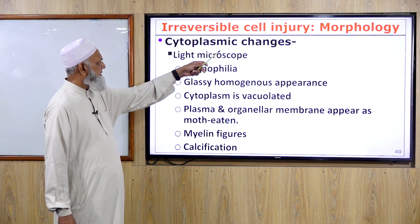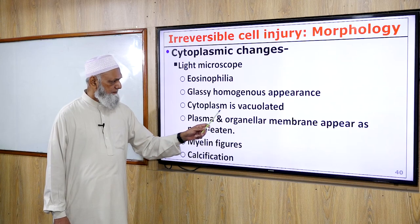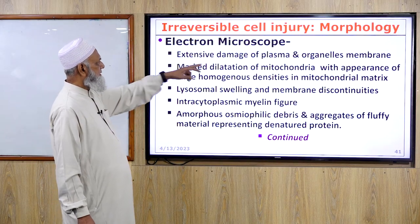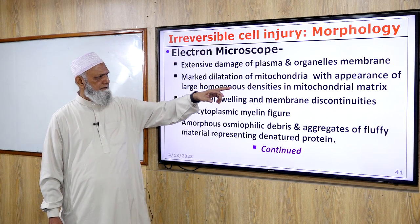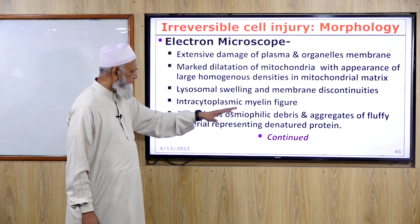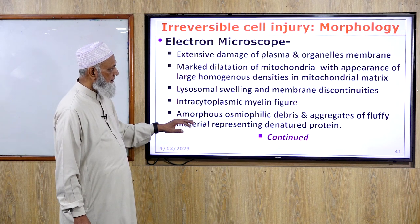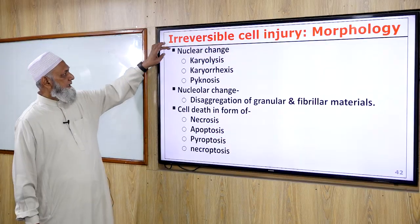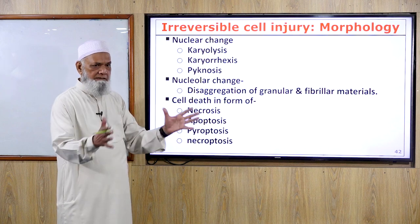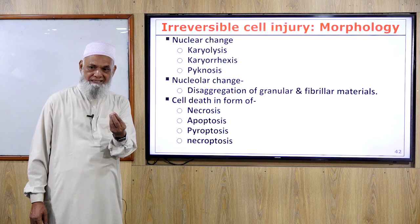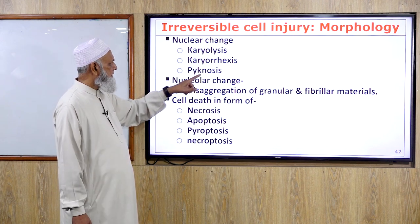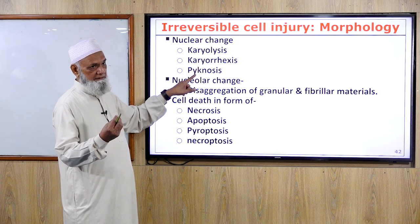Irreversible cell injury morphology — cytoplasmic changes on light microscopy: eosinophilia, glazing, homogenous appearance, vacuolated cytoplasm, plasma and organelle membranes appearing moth-eaten, myelin figures, and calcification. Electron microscopic features: extensive damage of plasma and organelle membranes, marked dilatation of mitochondria with large homogeneous densities in the mitochondrial matrix, lysosomal swelling and membrane discontinuities, intracytoplasmic myelin figures, amorphous osmophilic debris and aggregates of fluffy material representing denatured protein. Nuclear changes include pyknosis (small condensed black nucleus), karyorexis (fragmentation of nucleus), and karyolysis (dissolution of DNA).